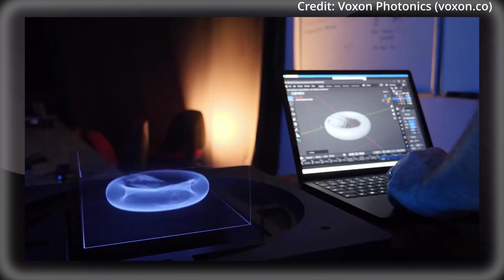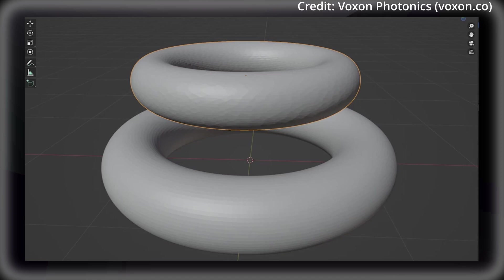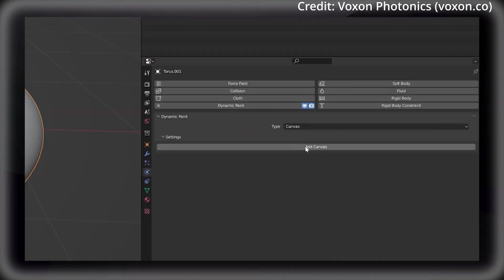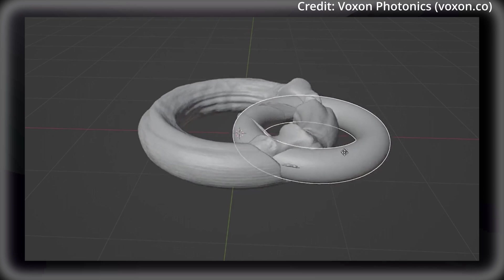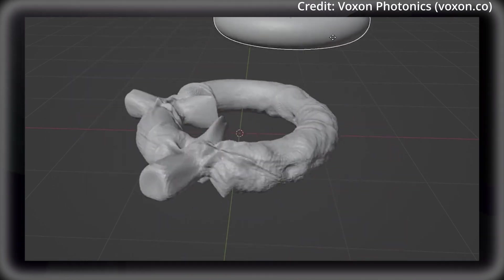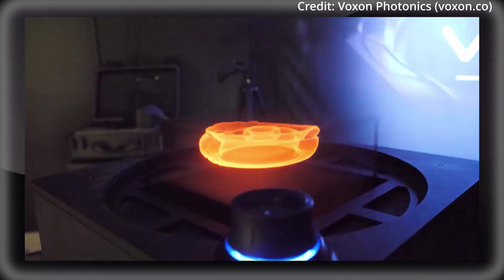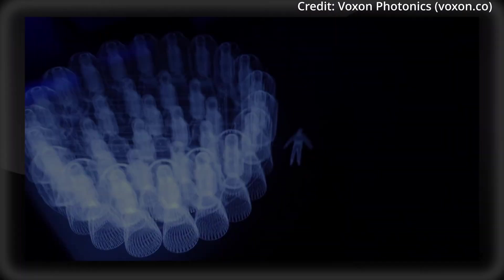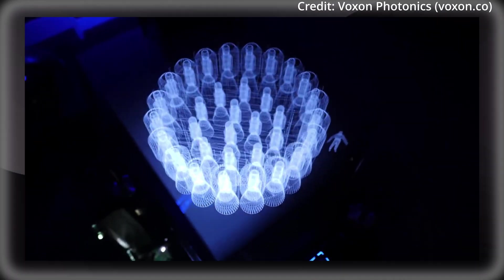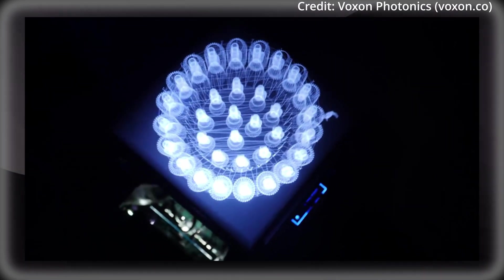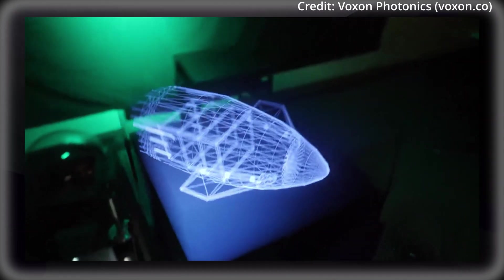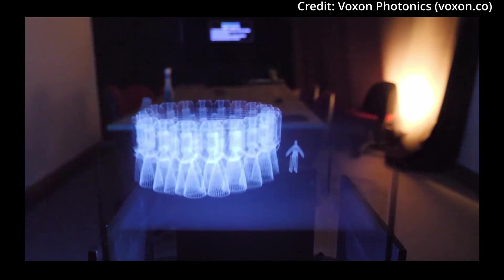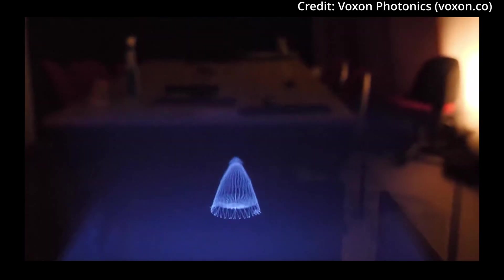Education might be transformed by these holograms, as students can visually engage with complex concepts in ways that would have previously been impossible, like exploring molecular structures or dissecting virtual frogs. But despite its impressive capabilities, the VX2 is not without challenges, as content creation for the platform requires a bit of optimization, and some applications may benefit from larger versions of the device. However, Voxen has made the system developer-friendly with software development kits and APIs to encourage innovation.